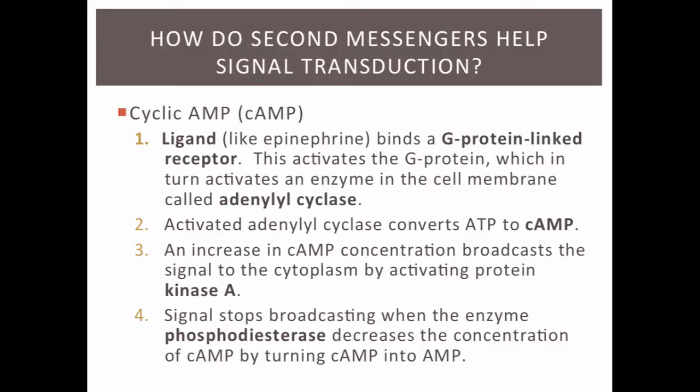The activated adenylyl cyclase makes a bunch of cAMP. This increase in cAMP concentration broadcasts the original signal to the cytoplasm because it activates a protein known as kinase A. So basically, our ligand binds to the receptor, which activates a G-protein, which activates adenylyl cyclase, which makes a bunch of cAMP, and all of that cAMP activates kinase A. This signal will stop broadcasting when the enzyme phosphodiesterase decreases the concentration of cAMP by degrading cyclic AMP into AMP.